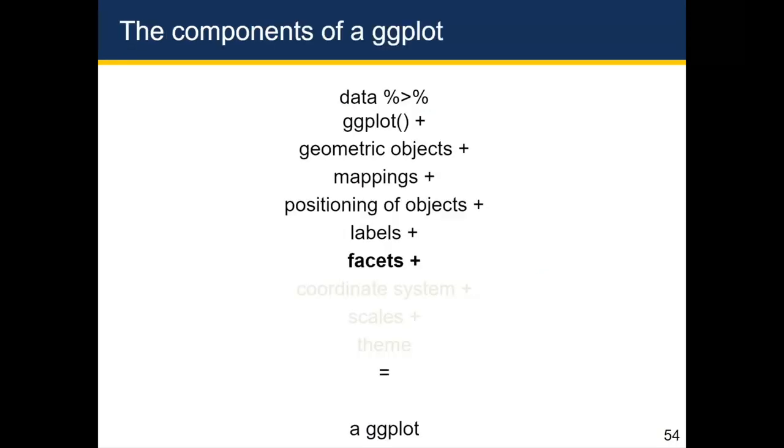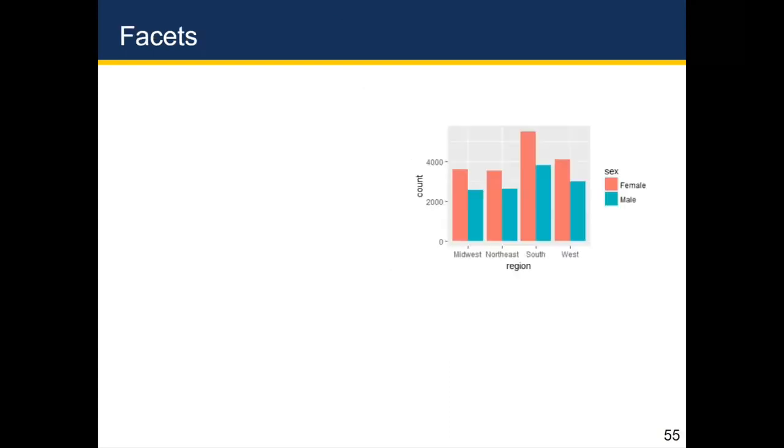Facets are a really good way to kind of stratify your analysis by another variable. In terms of comparing this to dplyr, I think of facets as being very similar to a group by function. Because they're effectively letting you carry out your analysis separately by the facet. Almost like how if you do group by summarize, the summarize function happens separately for each group.